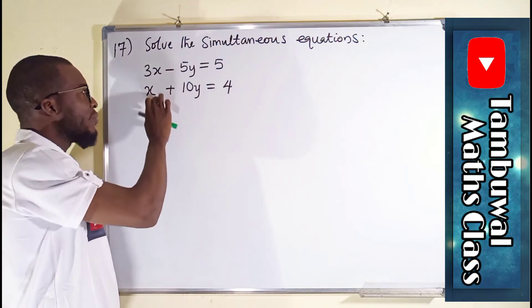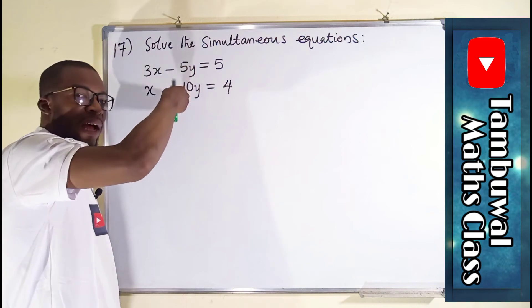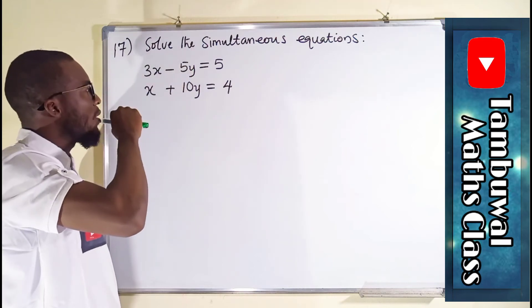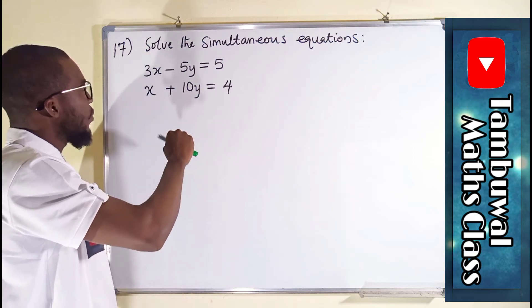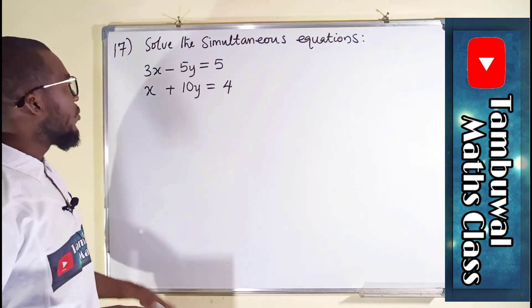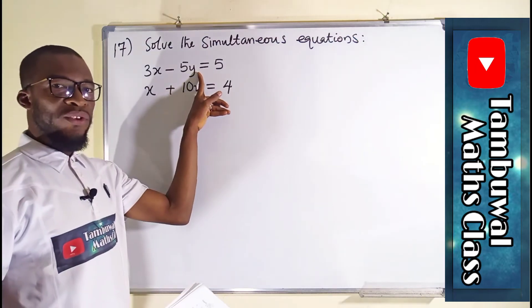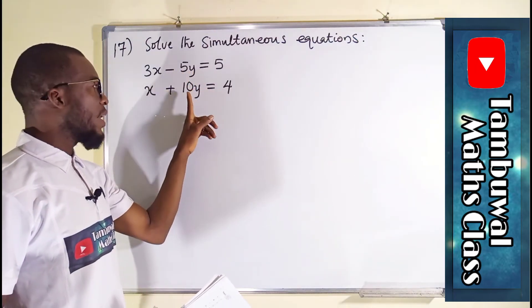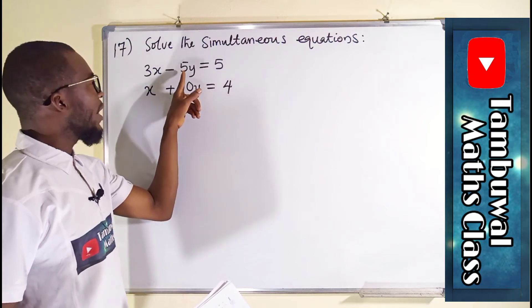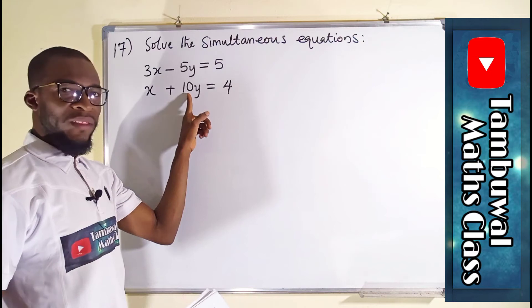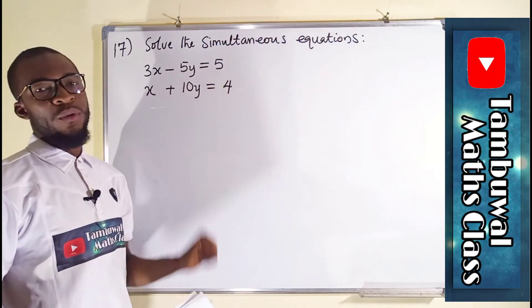So to eliminate one of these variables, either x or y, you have to ensure that they have a common coefficient. So now let us try to eliminate y. To eliminate y, you can see y in the first equation has a coefficient of negative 5, while here we have 10. So we can multiply 5 by 2 to obtain 10, but we have to multiply each and every term in that equation.